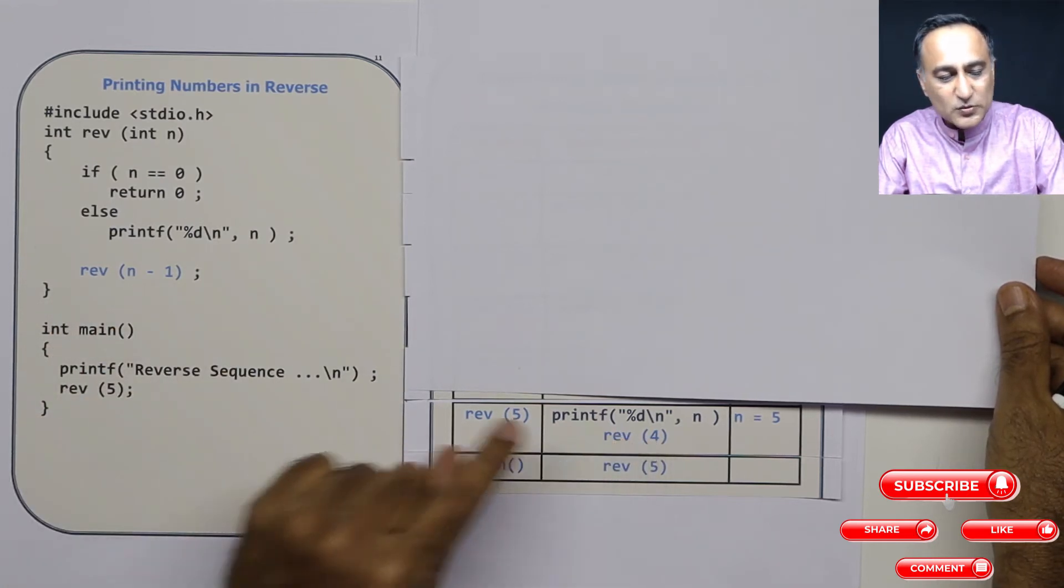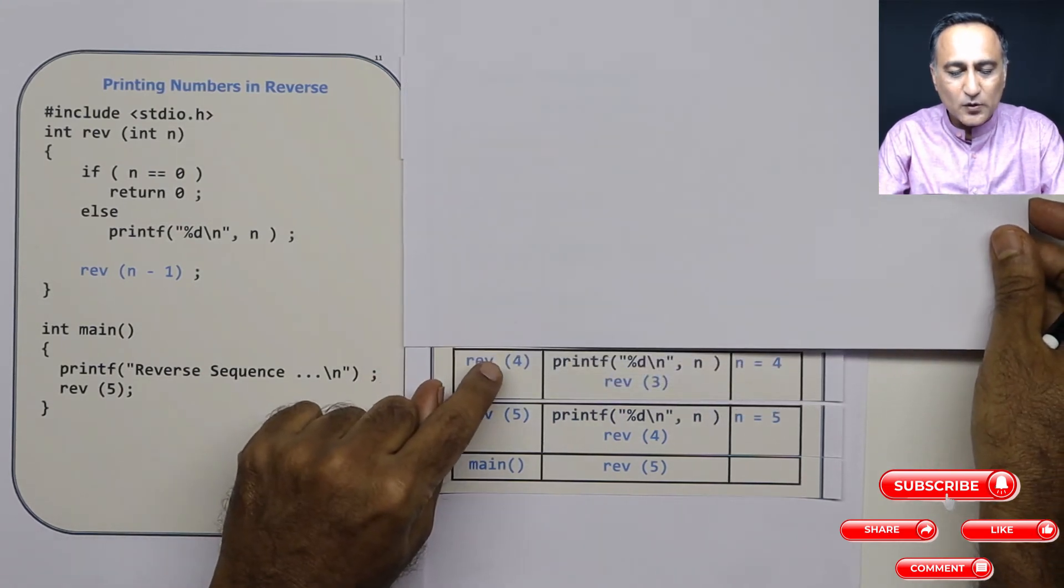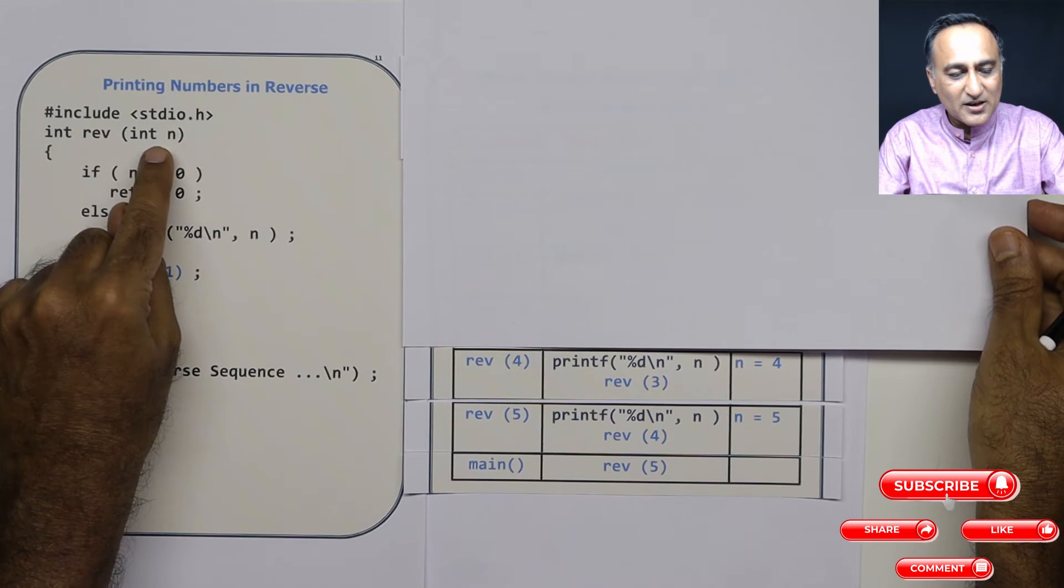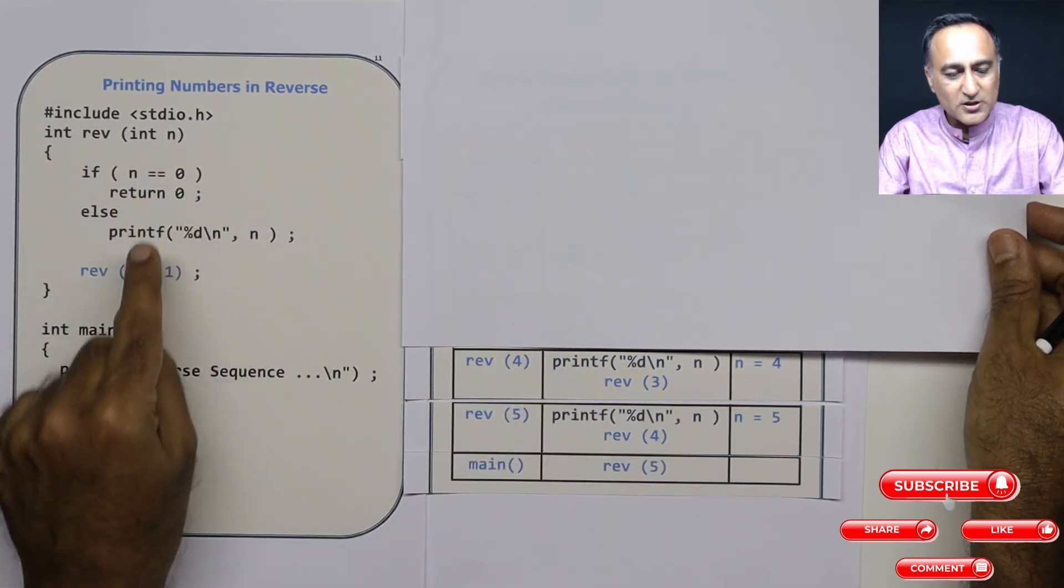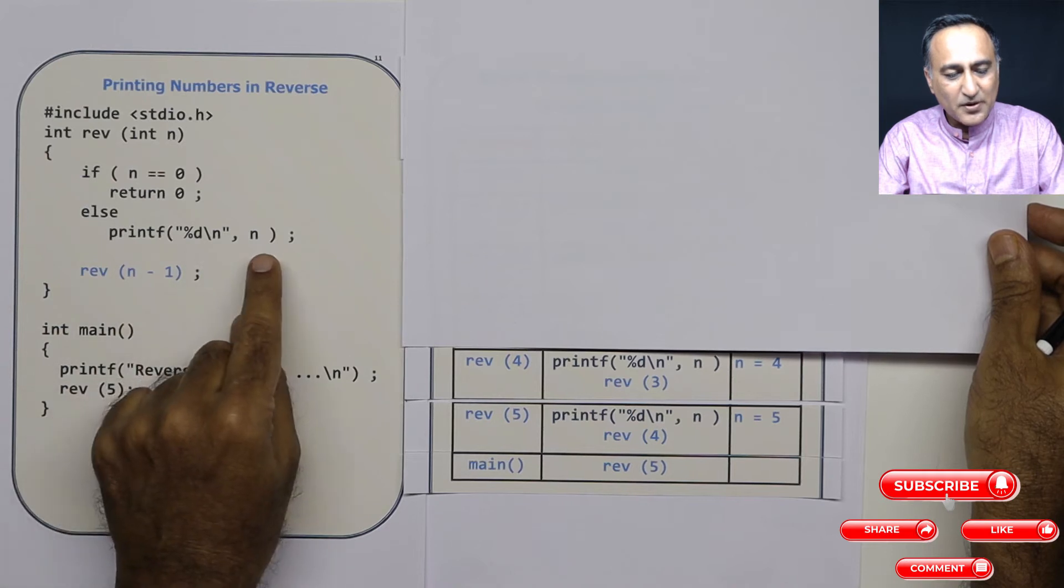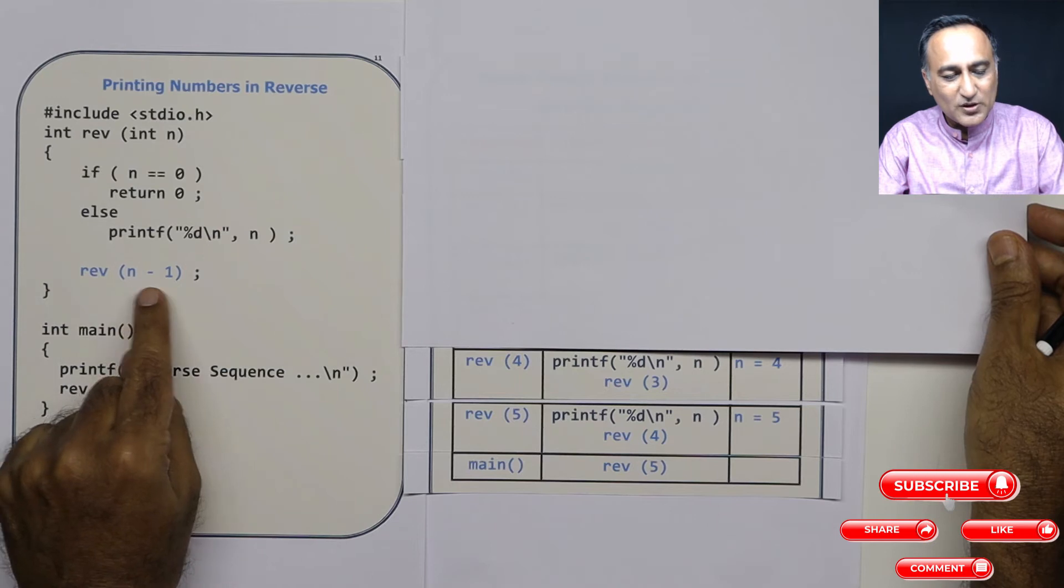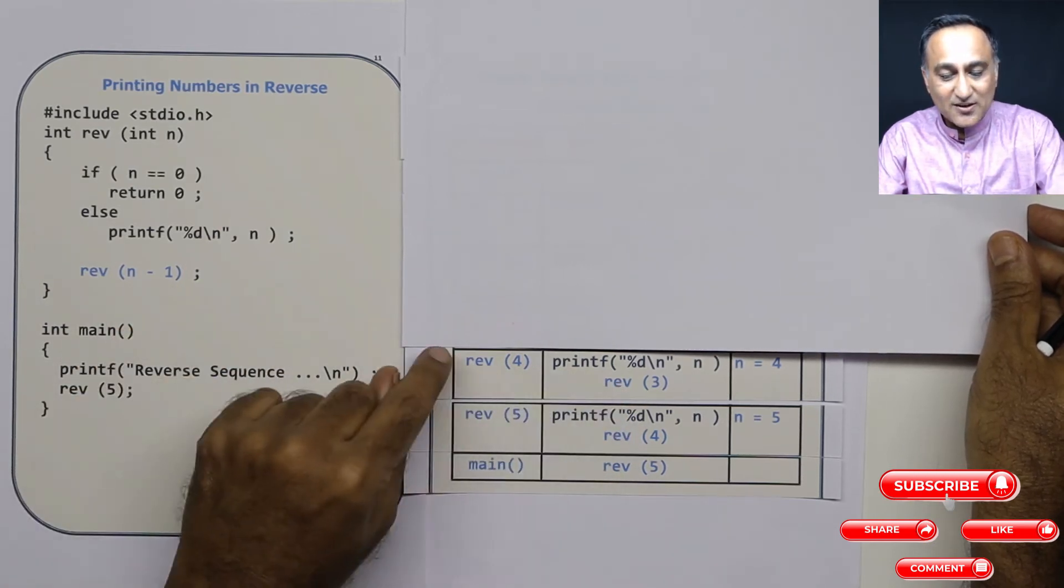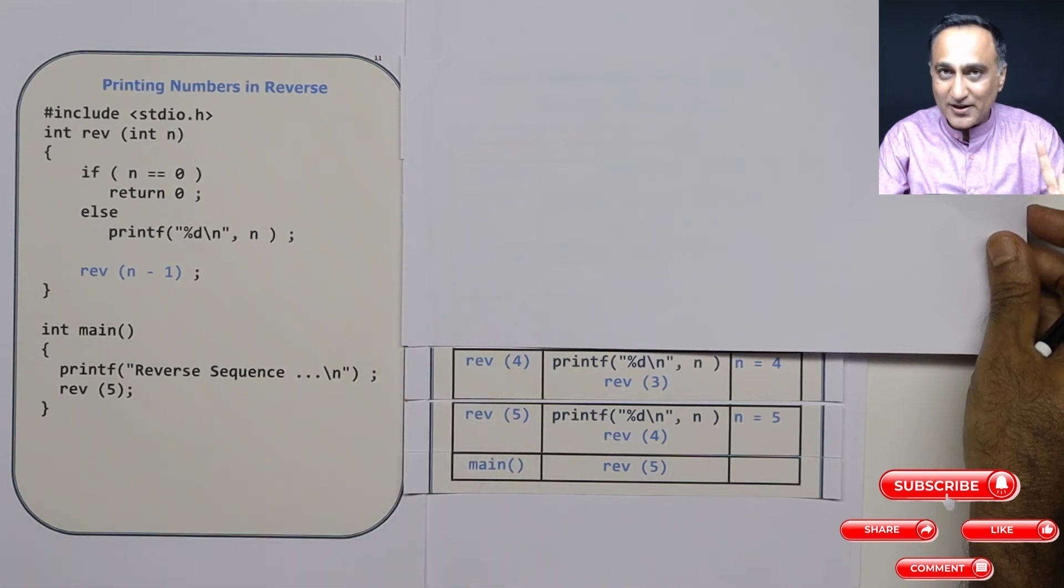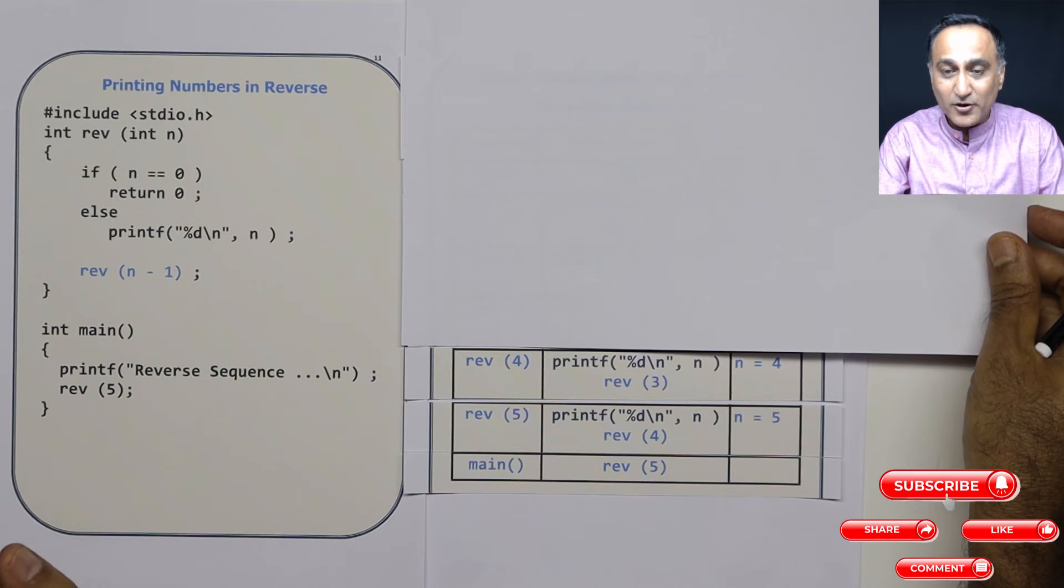So now I'm calling reverse with 4. So next time when reverse of 4 is called, then again, I come in here. n is 4. You can see n is 4. 4 equal to 0 is false. I'm coming here. Print 4. So after 5, 4 is going to be printed. Then I'm calling reverse with 4 minus 1. I'm calling reverse of 3. So this function reverse of 4 has not yet completed execution because I have called reverse of 3 and I'm waiting for its result.